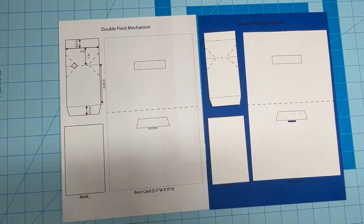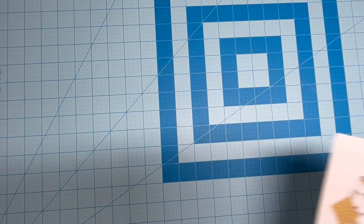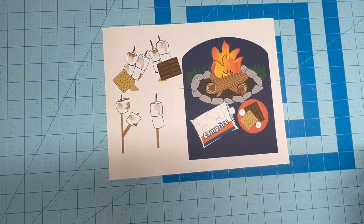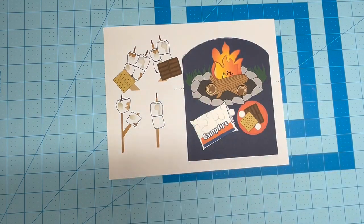For this demo, I'll be using a copy of the Double Pivot Mechanism template printed on white cardstock, and a color copy of the campfire props that I created in Adobe Illustrator. It's helpful to score it before cutting it out.